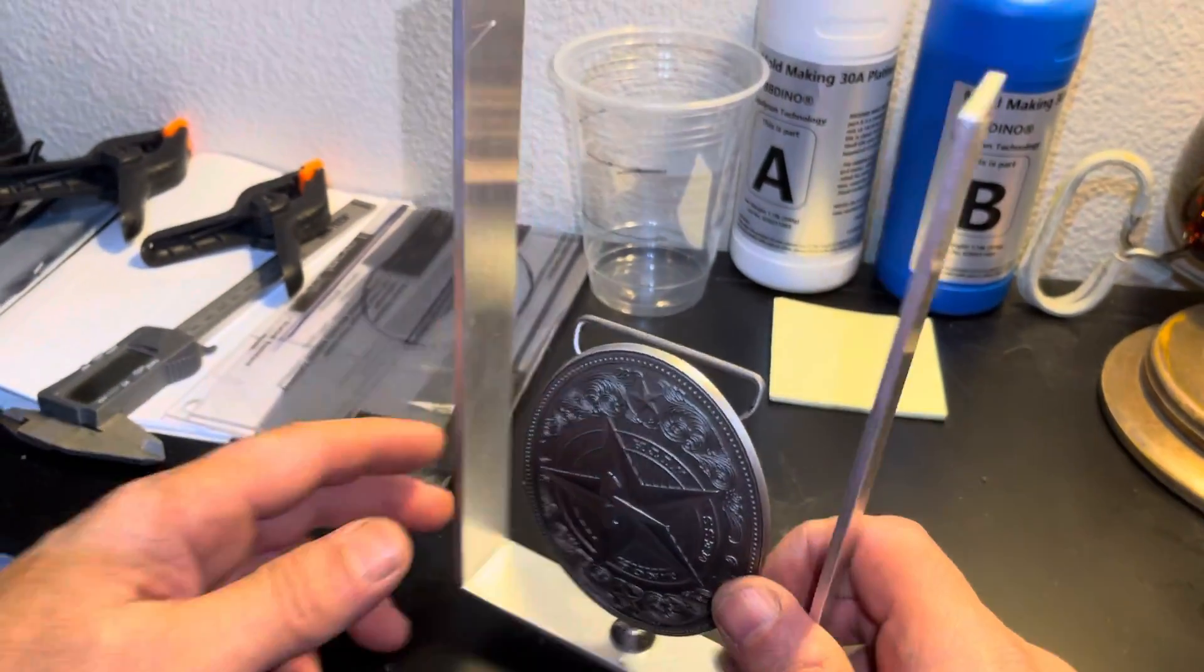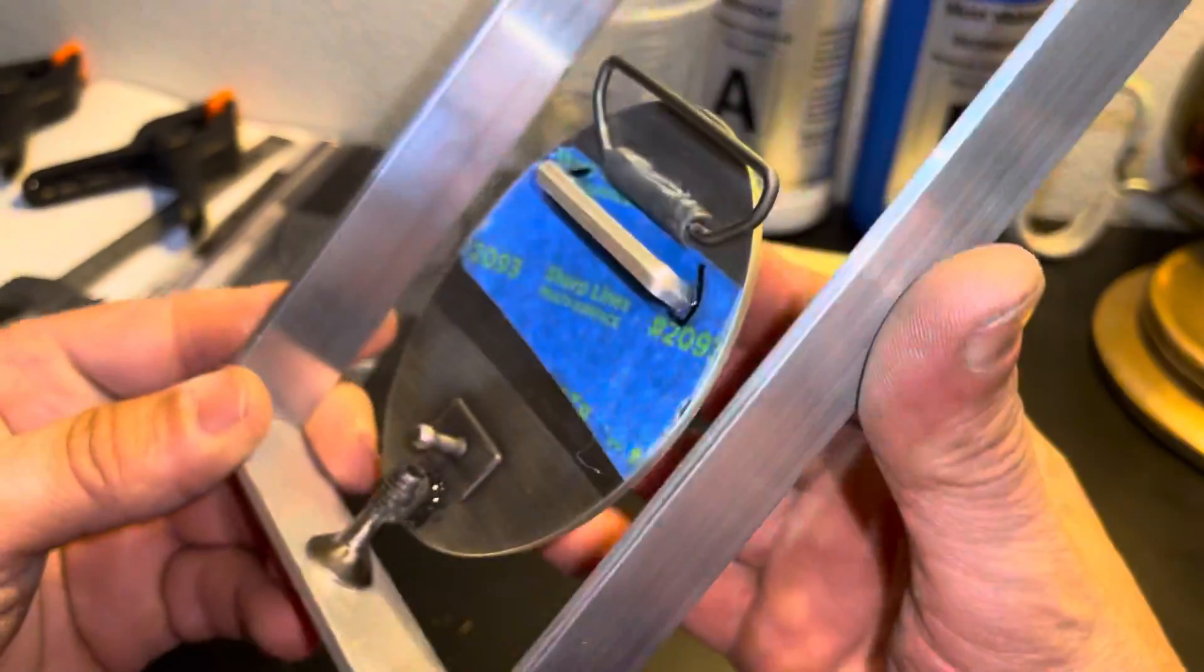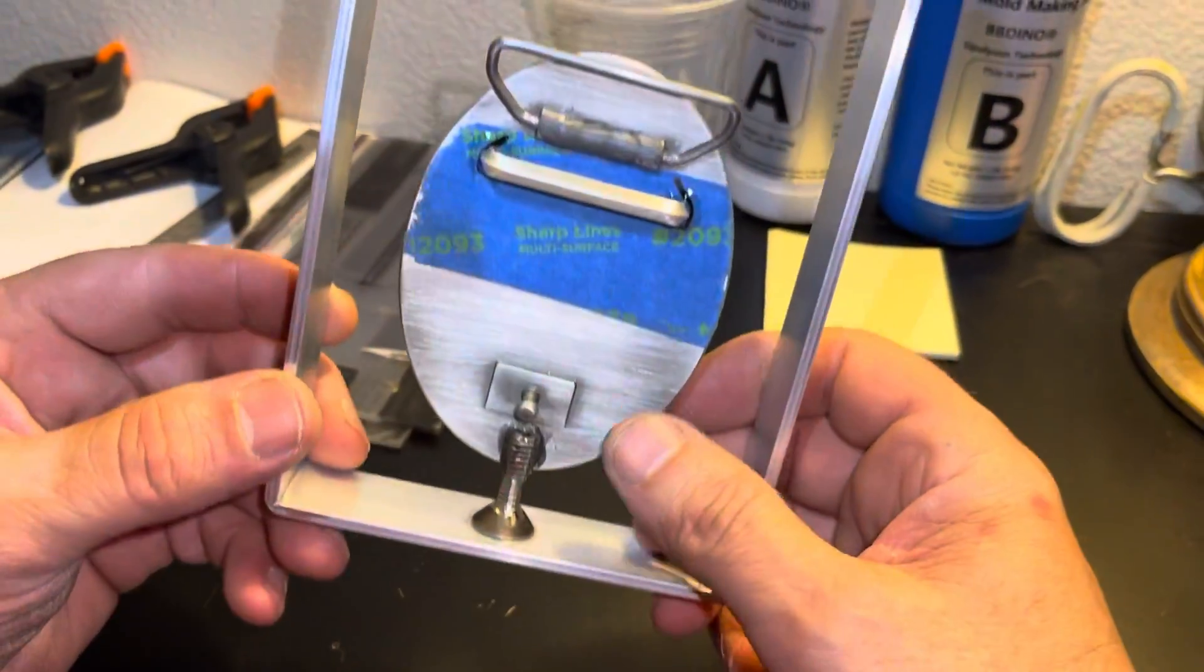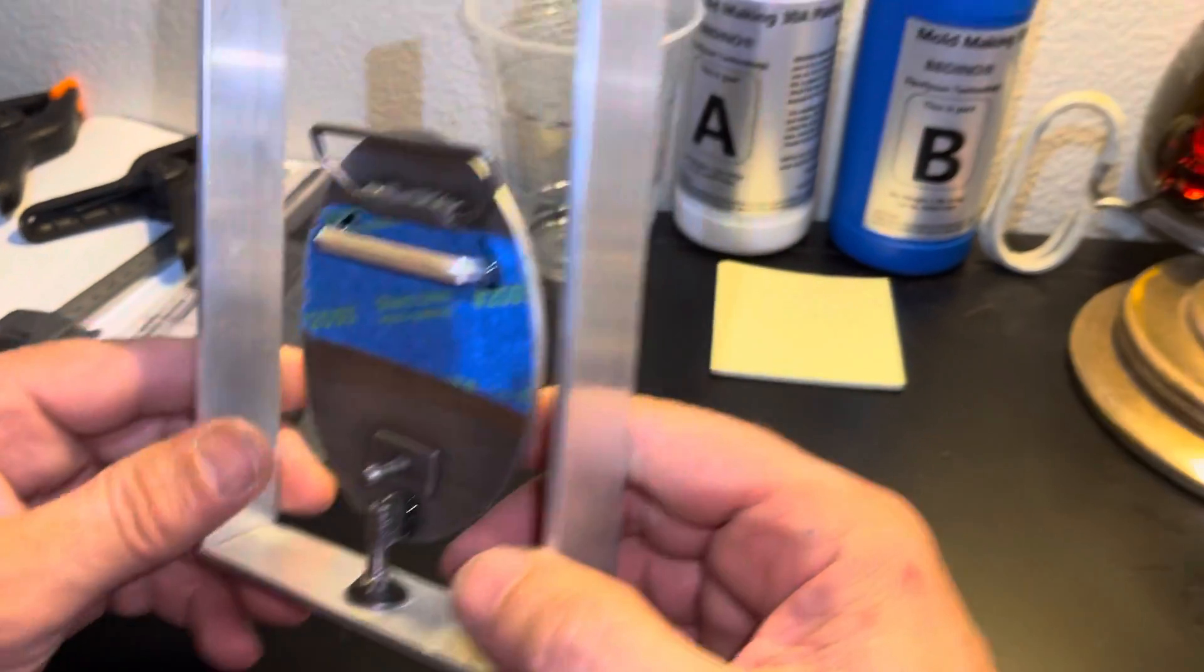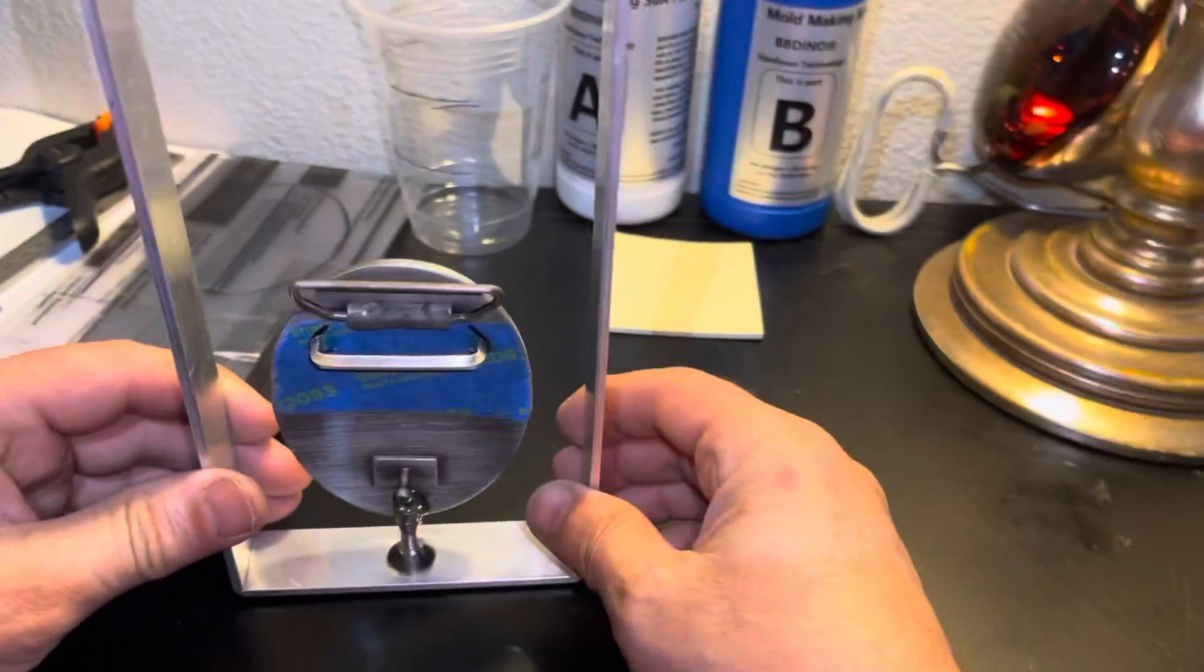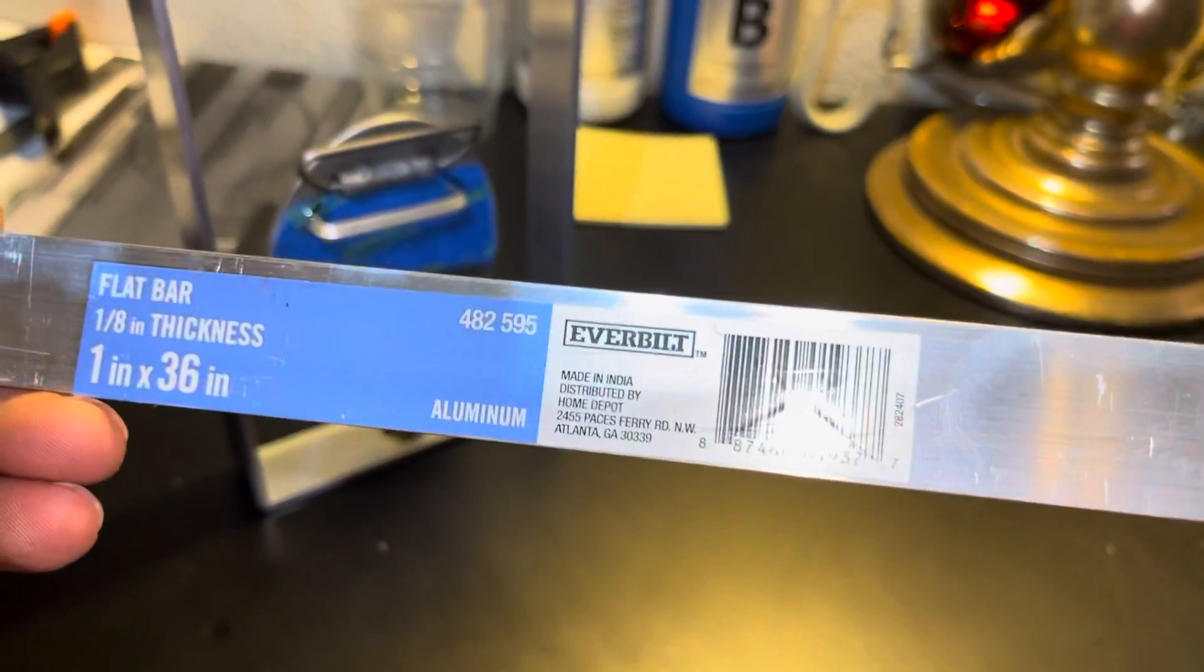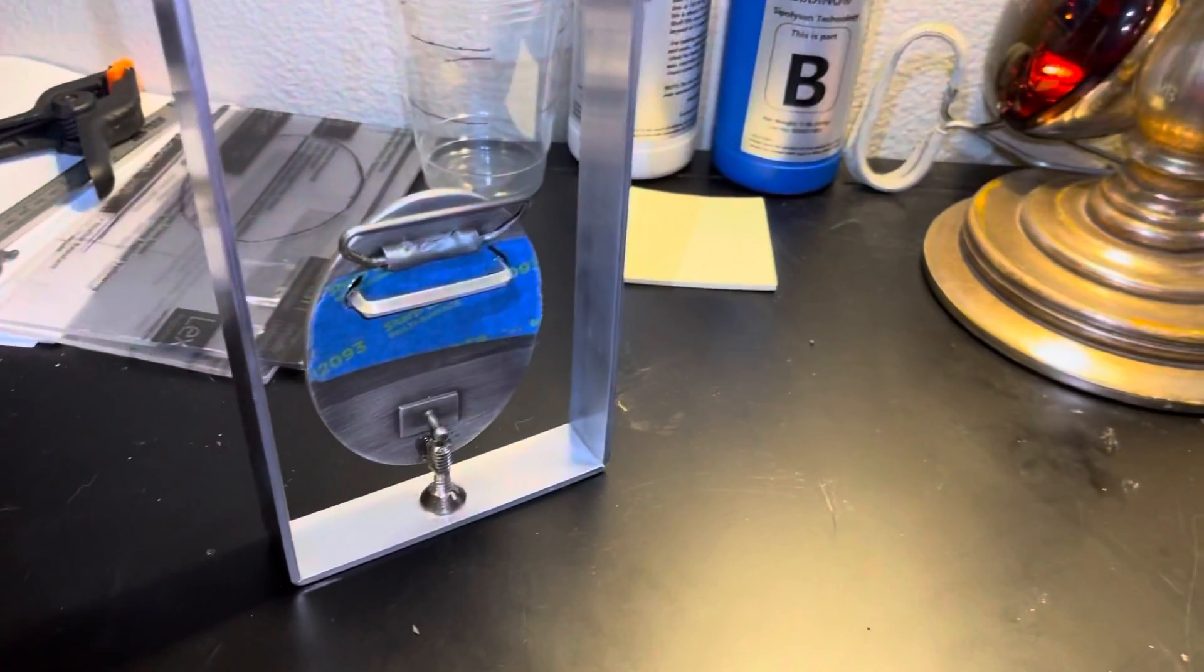Hi there YouTube. A quick video about making a mold for lost wax casting. It's going to be a silicone mold and I've already made this frame with a Home Depot three-foot piece of aluminum.